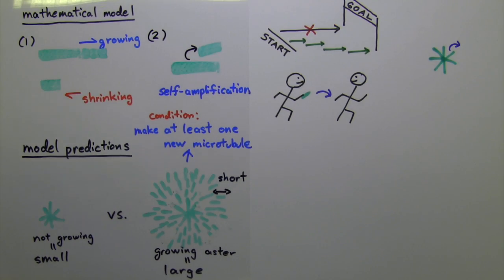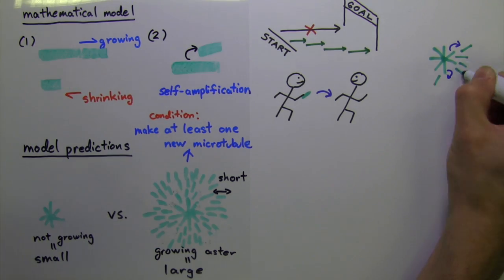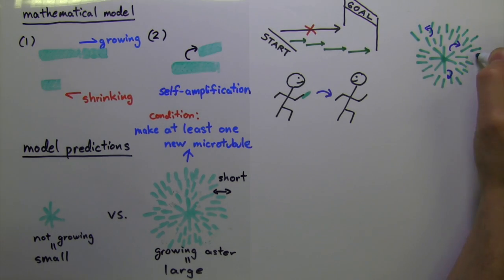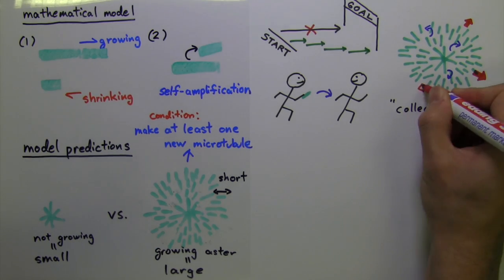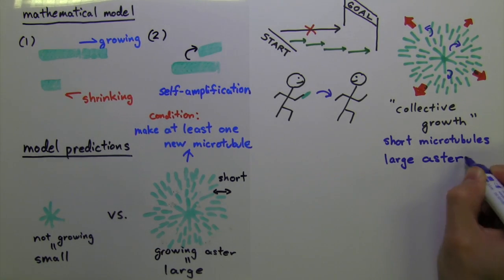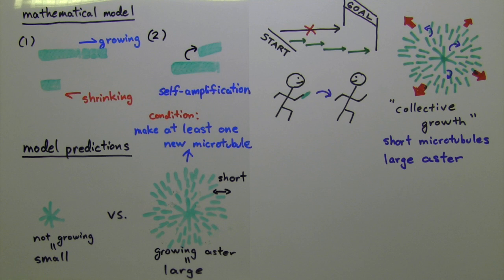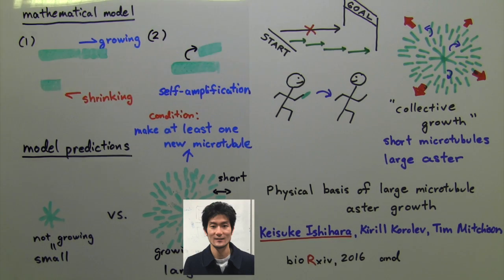In summary, if microtubules self-amplify, no single microtubule has to be super long. Under our newly proposed collective growth model, even short microtubules, as a group, can make a large structure with unlimited size. For more information, please check out our full story.